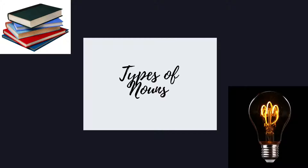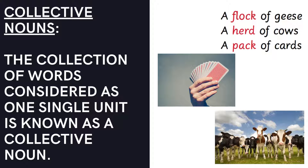Types of noun. Collective noun: the collection of words considered as one single unit is known as a collective noun. For example, a flock of geese, a herd of cows, a pack of cards.